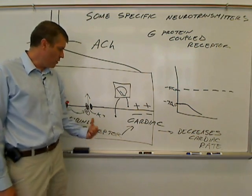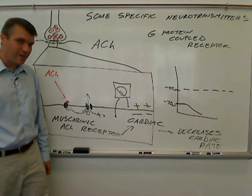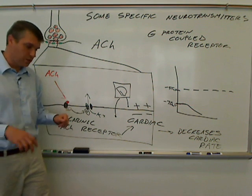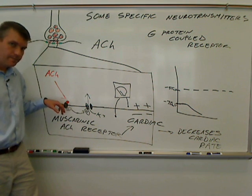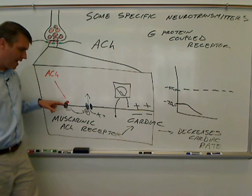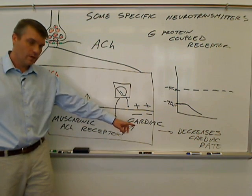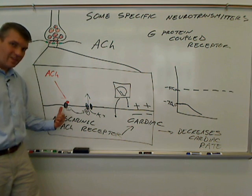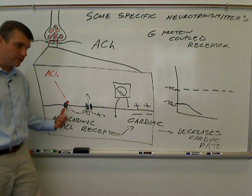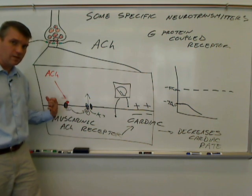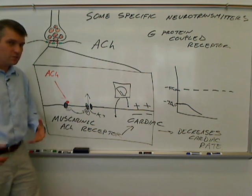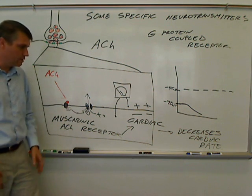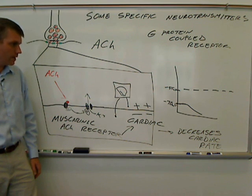To give you an example of how we can interfere with this, atropine is a drug that is an anticholinergic. It inhibits this receptor, so the acetylcholine can't bind to it and decrease the heart rate. So if you inject someone with atropine, you're going to inhibit this effect. Their heart rate is not going to be decreased — in fact, it's going to be increased if you use atropine. That gives you a real-life example of where we can use this knowledge in a drug format to help somebody increase their heart rate if we need to.